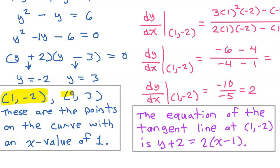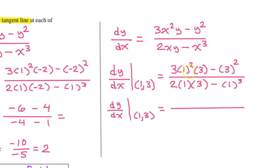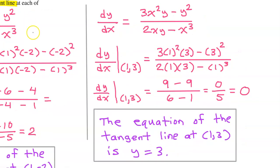Now we need to do that same thing for the point (1, 3). In order to find the slope, we evaluate dy/dx at (1, 3). Substituting 1 for all the x's and 3 for all the y's: 1 squared is 1, so this is really 3 times 3 which is 9, minus 9. And in the denominator, 2 times 3 is 6, minus 1. So this is just 0 over 5, which is 0. Since the slope is 0, that is a horizontal tangent line, which means the equation will be y equals something — specifically, the y value of the point of tangency. So y equals 3. That is it for part B.